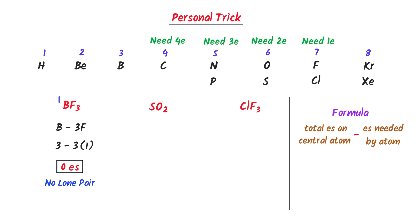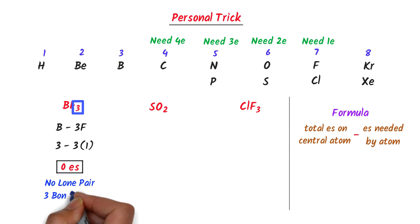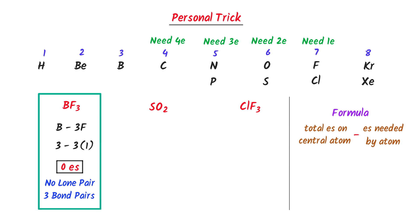So there is 0 lone pair present on the central atom. Now what about the bond pair of electrons? This 3 subscript means that there are 3 bond pairs present in this molecule. Therefore, there are 0 lone pairs of electrons and 3 bond pairs of electrons present in this molecule.